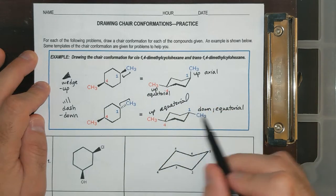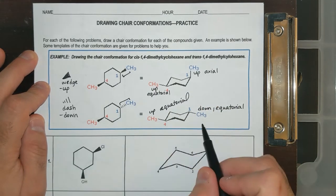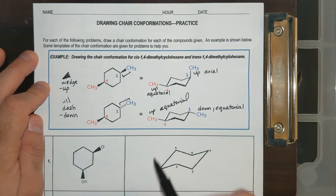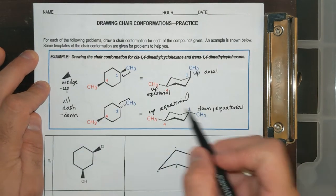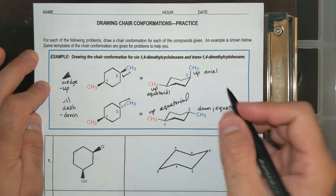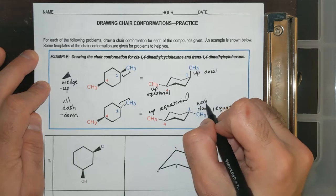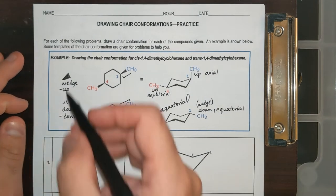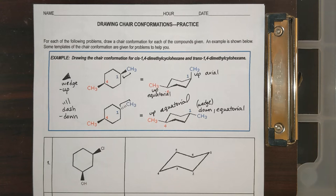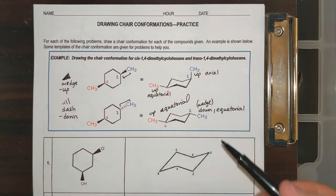The one that's down has a dash when I draw it. We're going to be looking more at these dashes and wedges in this worksheet and applying them to drawing chair conformations in equatorial and axial positions.